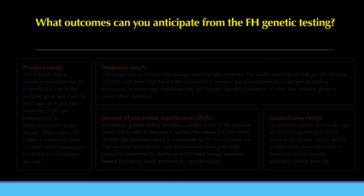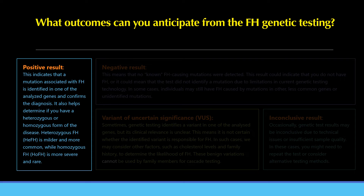What outcomes can you anticipate from genetic testing for FH? Genetic testing involves analyzing specific genes associated with the condition, such as LDLR, APOB, or PCSK9. A positive result indicates that a mutation associated with FH is identified in one of the analyzed genes, confirming the diagnosis. It also helps determine whether you have the heterozygous or homozygous form — heterozygous FH is milder and more common, while homozygous FH is more severe and rare.